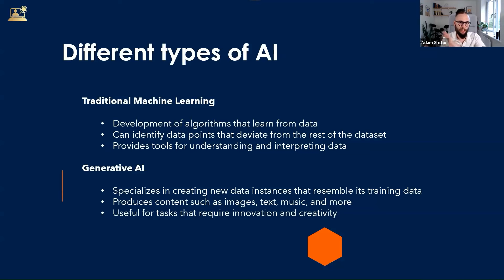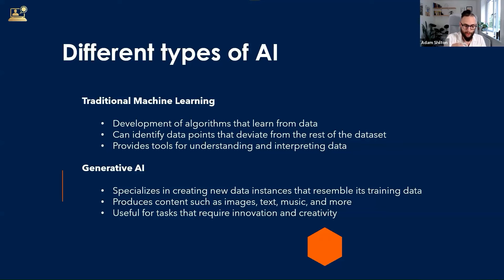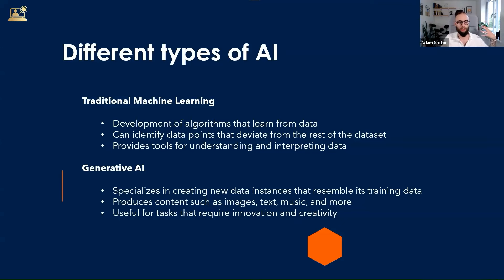When we move into generative AI, it is a branch of AI that specializes in creating new data instances that resemble its training data. It leverages advanced machine learning — a subset called deep learning — to produce content that can include images, text, music, and more. This is particularly useful for tasks that require innovation or creativity: designing new products, simulating stuff, and automating content creation. But what do both of these have in common? Pattern recognition.